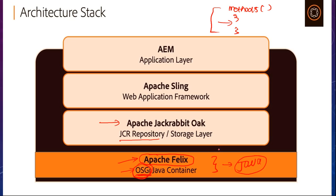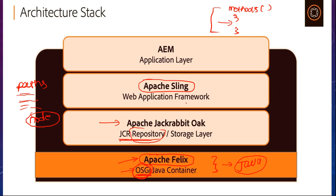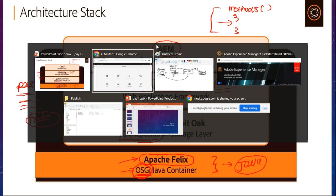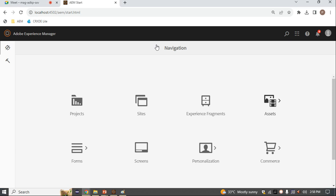When a user adds content, this data will be stored inside your JCR Repository. All your data will be stored inside this repository. Inside the architecture we also have Apache Sling, which is a web framework. It is a REST-based framework. At this layer we also have project assets — assets meaning your images, files, folders, and anything else.